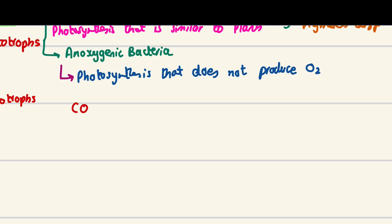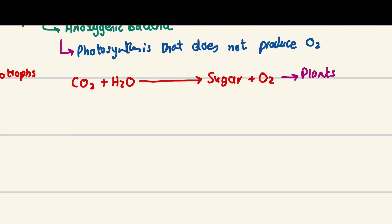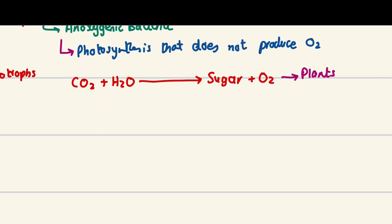In normal photosynthesis, we have carbon dioxide and water going in, producing sugar (C₆H₁₂O₆) and oxygen as output. This applies to normal plants and also cyanobacteria.